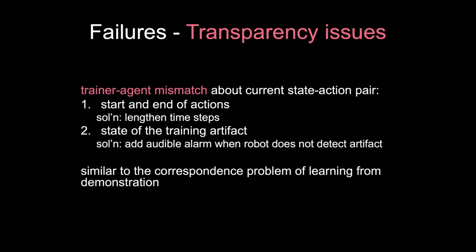The solution was to lengthen the time steps. For move forward, the time step was a second and a half — maybe the first half-second it was technically moving forward but not visually so, but then the rest of the time step it was. That means a large portion of the time step, the agent's action matches what the trainer thinks is the action. The second issue was the Vicon system sometimes losing the training artifact, creating confusing learning results.